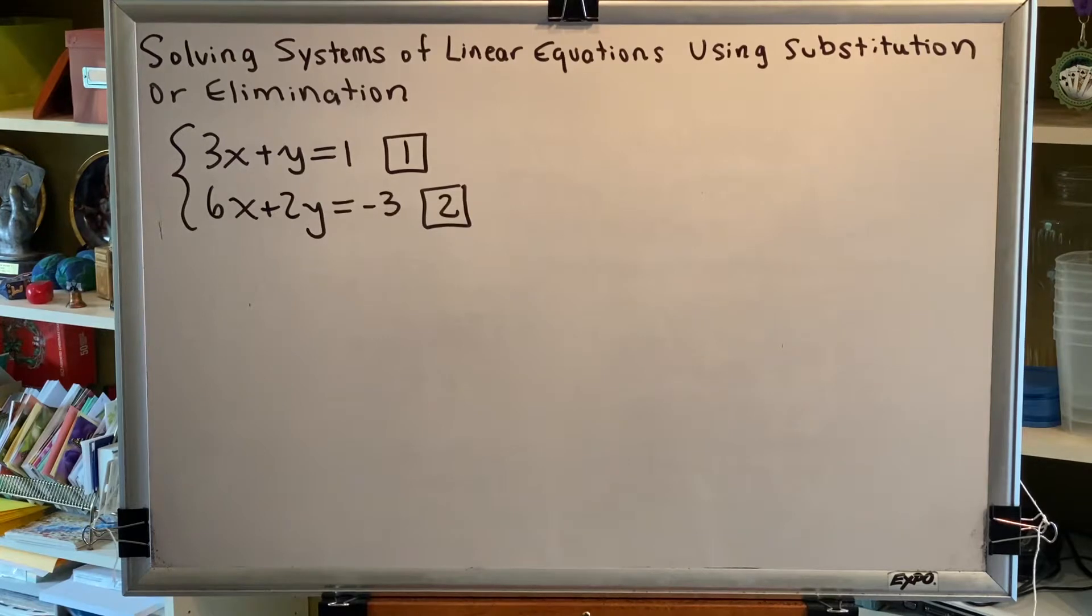So the problem we're looking at says 3x plus y equals 1 for our top equation and 6x plus 2y equals negative 3 for our bottom equation.